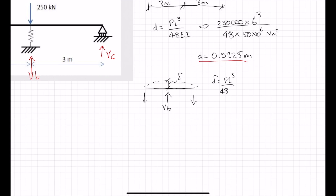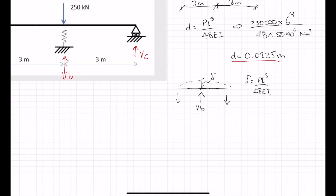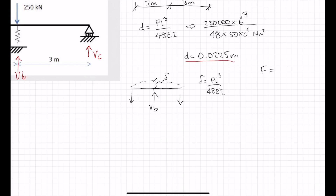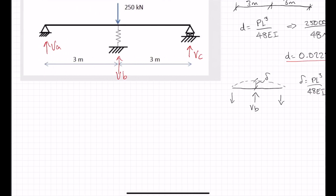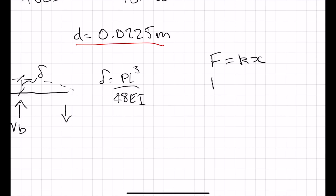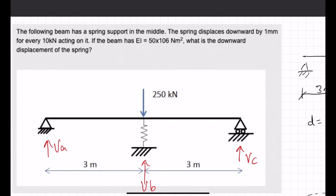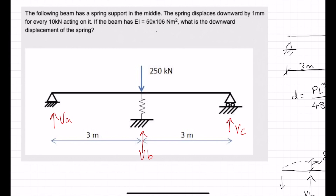Delta is equal to PL cubed over 48EI. VB is the force due to the compression of the spring. Using Hooke's law, F equals KX, where K is the stiffness of the spring and X is the displacement. We're told the spring displaces by 1 millimetre for every 10 kilonewtons. So we need to flip it around: 10 kilonewtons per 0.001 metres equals 10,000 newtons per 0.001 metres, which equals 10 times 10 to the 6 newtons per metre.